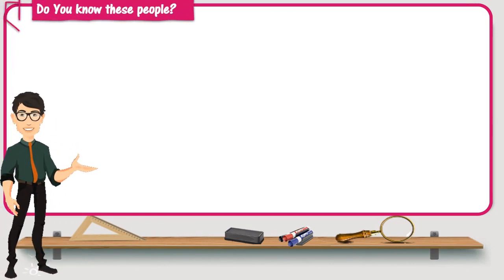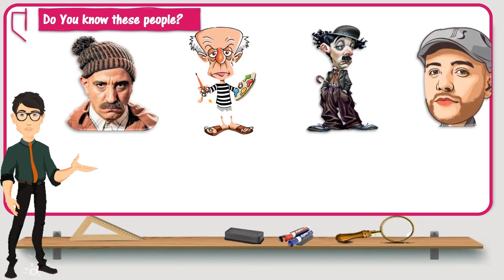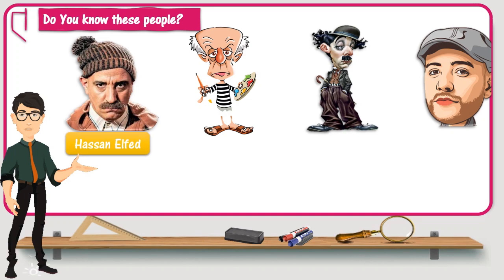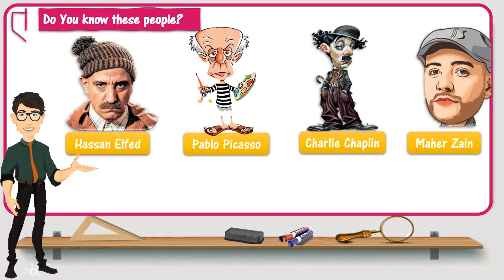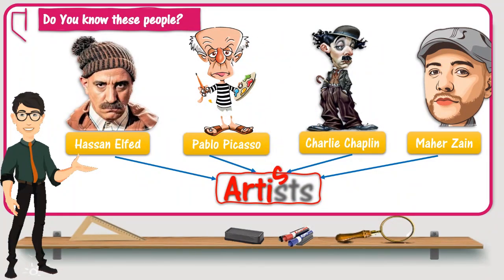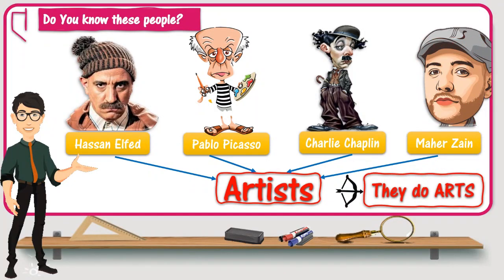First of all, I would like to ask you about these people. Do you know them? Of course you do. The first is the Moroccan famous comedian Hassan Fidd. The second is a drawing of the famous Spanish painter Pablo Picasso. The third is Charlie Chaplin's famous character Charlo, and the last is the famous singer Mahersin. The question is, what are they? They are artists. What does that mean? It means they do arts. But do they do the same type of art? Of course no, and that means there are many types of arts.